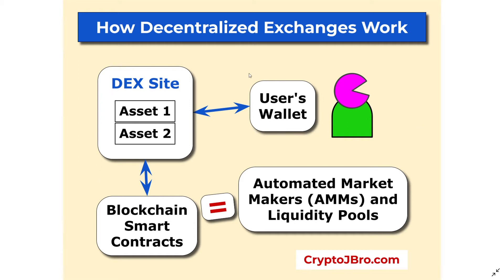Our wallet is interacting directly with these liquidity pools, which are also called automated market makers. The smart contracts themselves can be thought of as the automated market makers. Various users can put up and lock assets into the liquidity pools — it could be called staking or farming — and the smart contracts regulate all of that.